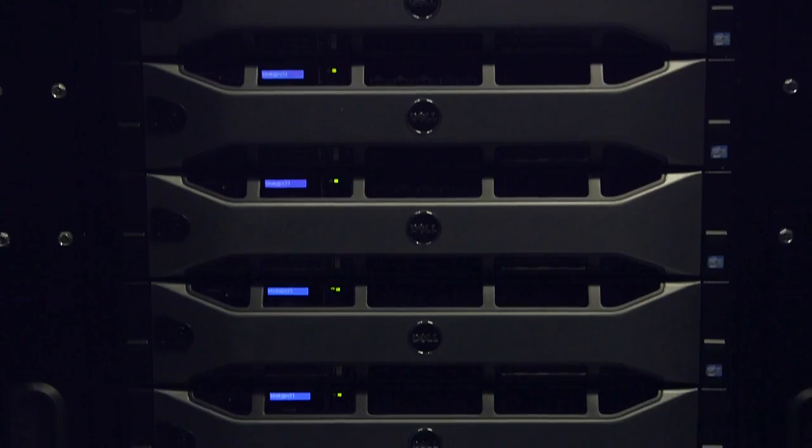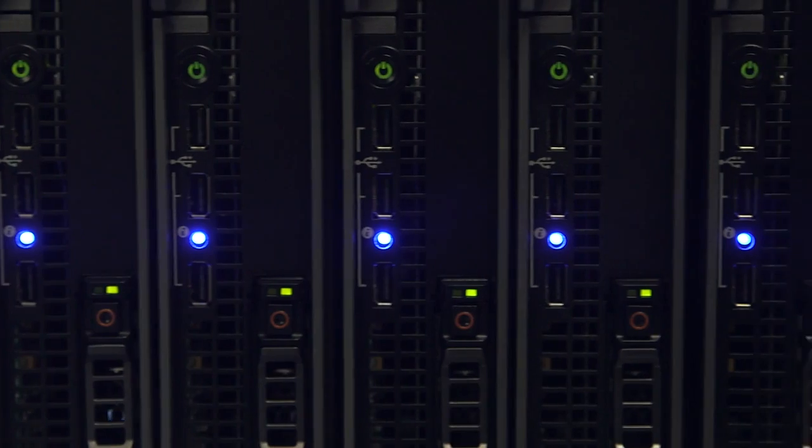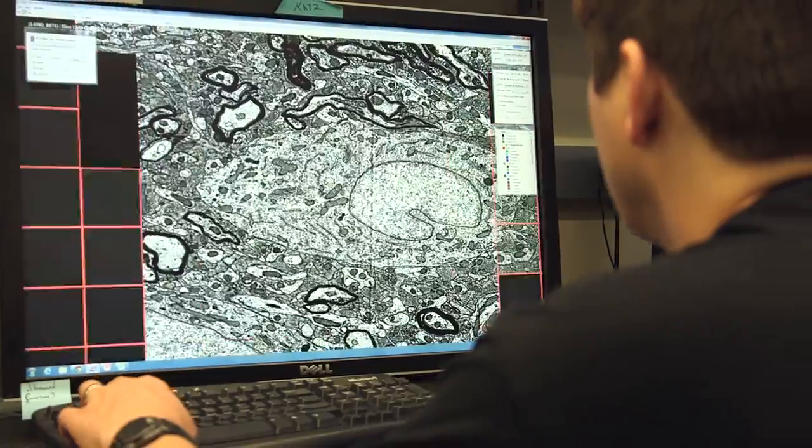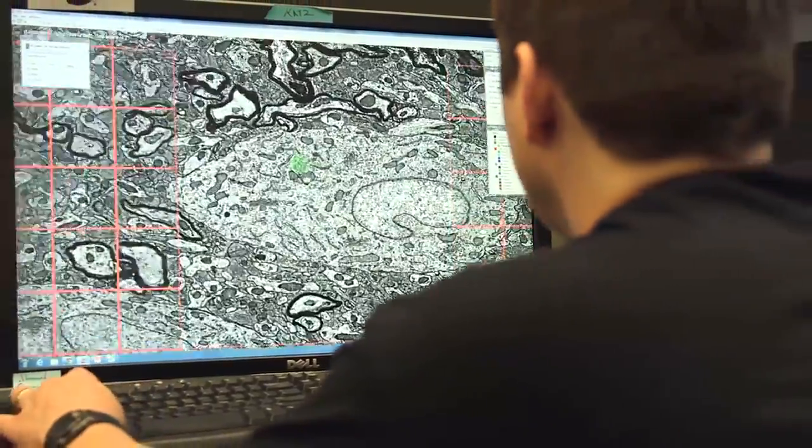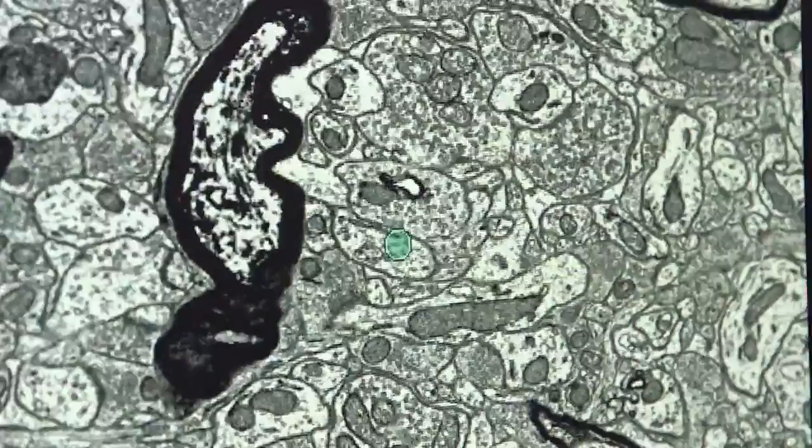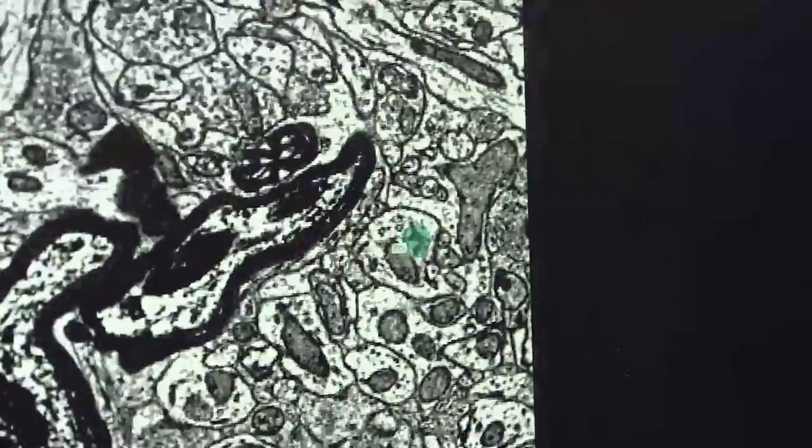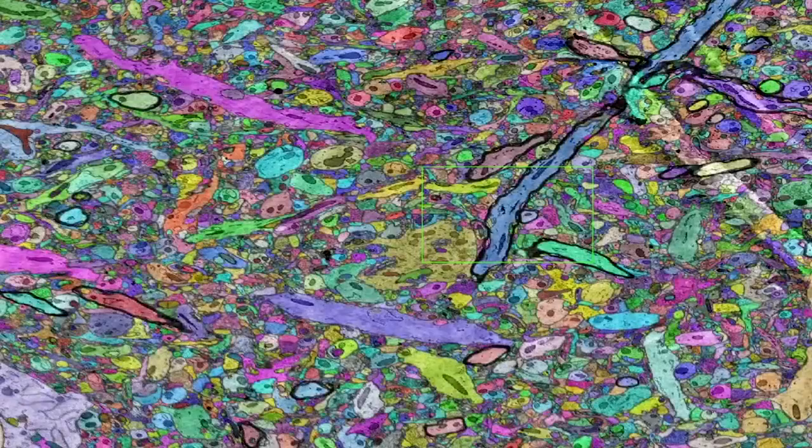But now you have a fire hydrant massively opened throwing out this huge amount of data, and to turn the raw data into information we can use we have to color it in. A human can color one thing at a time. A computer can color 10,000 things at a time.